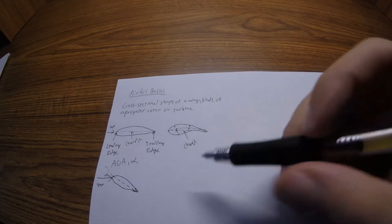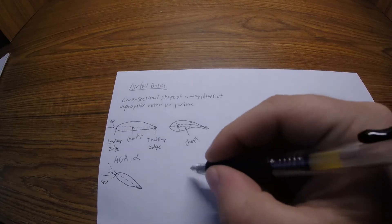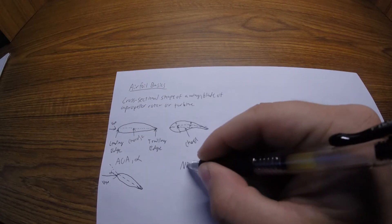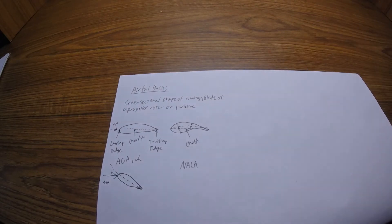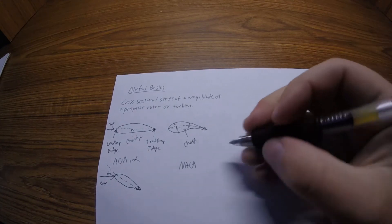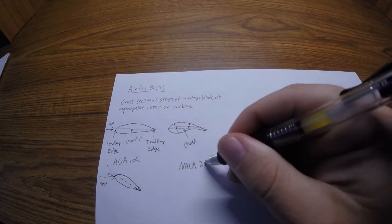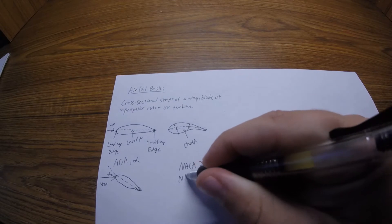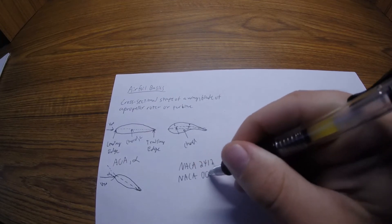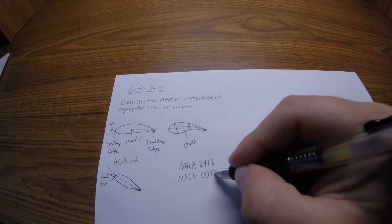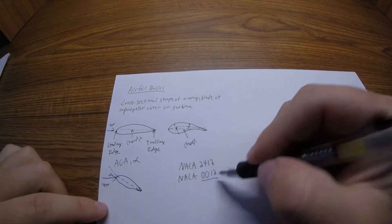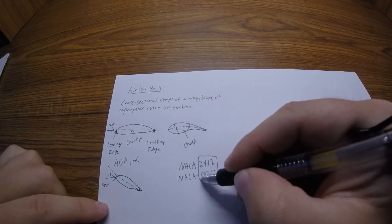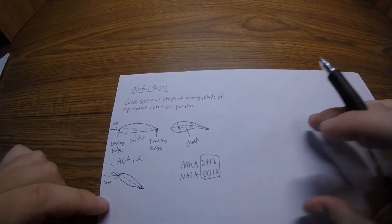There's a naming convention for basic airfoils called the NACA naming convention. You'll see a lot of NACA, let's say a 2412 or NACA like 0012. These are four digit designations for the shape of an airfoil.